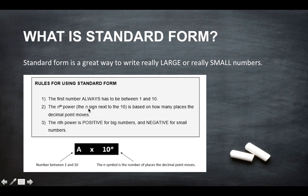The nth power, the n sign next to the 10, is based on how many places the decimal point moves. So the nth power is positive for big numbers and negative for small numbers. So this sounds a little bit confusing but it will become much clearer in the sample questions I'm about to show you.